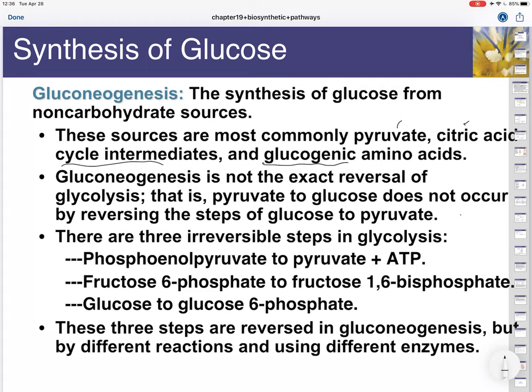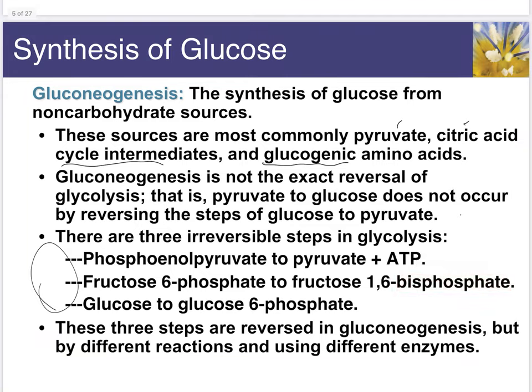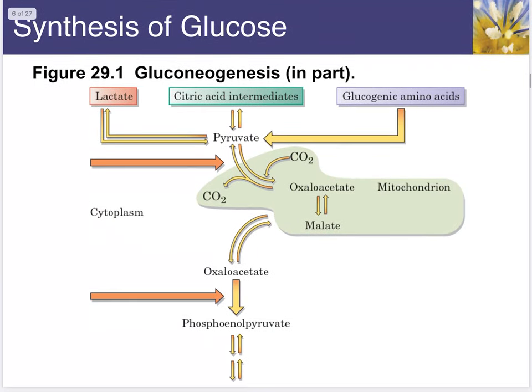There are a few steps that are actually reversals of glycolysis through reactions. In order to get these to reverse, we have to have specific enzymes that are involved. In glycolysis, these three reaction steps would not be reversible with the given enzymes in glycolysis, but we can do this using different enzymes in a process called gluconeogenesis — turning phosphoenolpyruvate back into pyruvate, or turning fructose-6-phosphate back into fructose-1,6-bisphosphate, or glucose to glucose-6-phosphate. So these can all be done backwards.